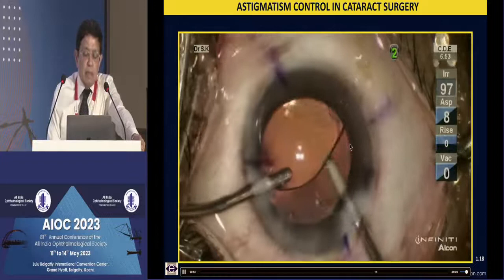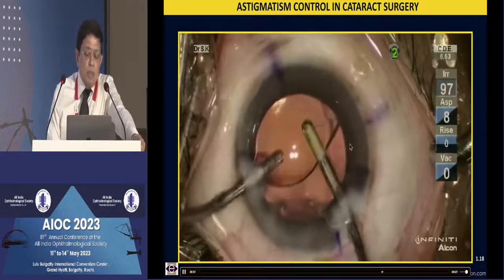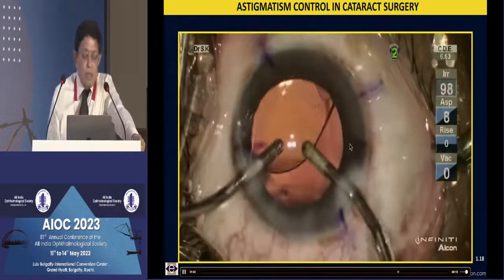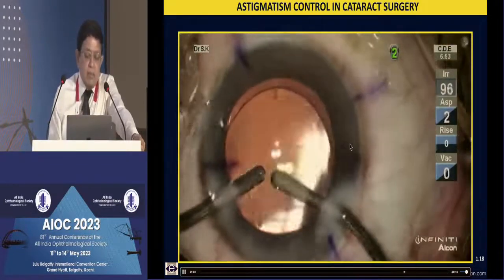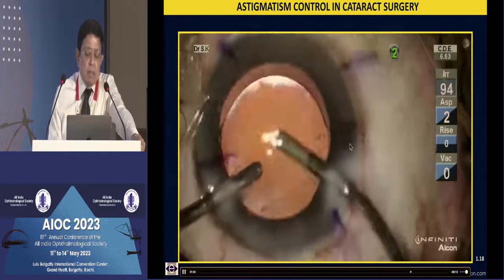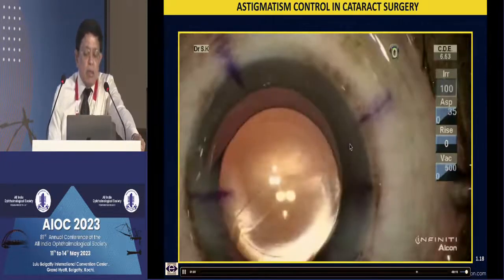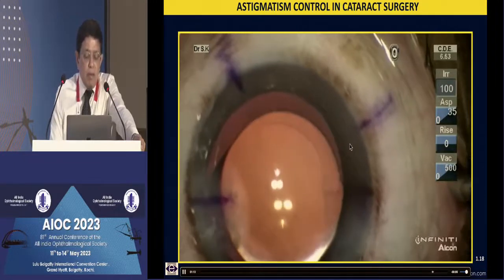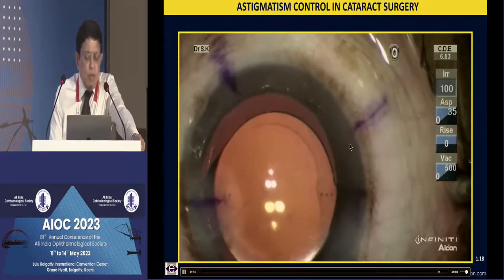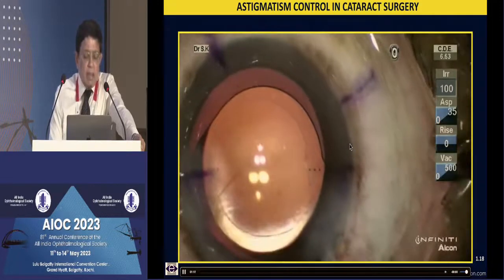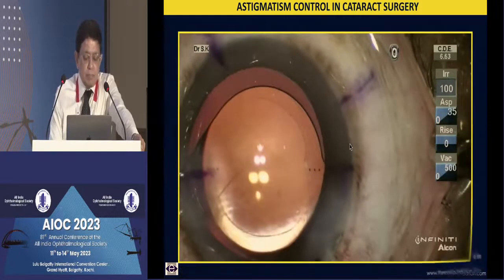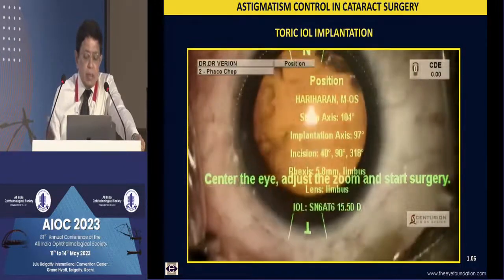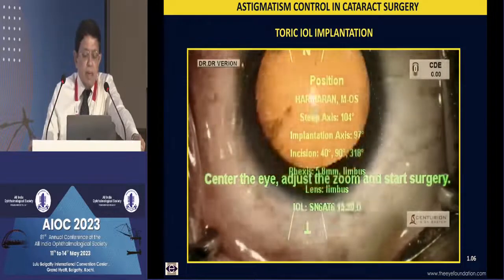Evacuating the viscoelastic even behind the IOL quite completely is important. I then position the lens and tap it onto the posterior capsule, which is also important. Most rotation of toric IOLs occurs in the first one hour — that is one reason I patch all my toric IOL patients, even though I do most surgery under topical anesthesia, for a couple of hours before seeing them post-operatively and discharging them.